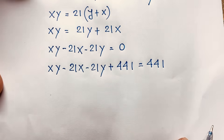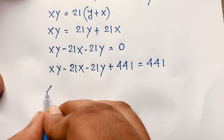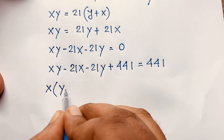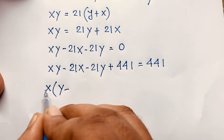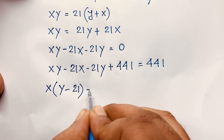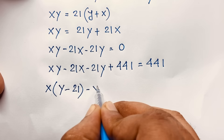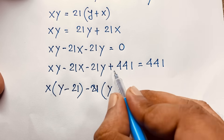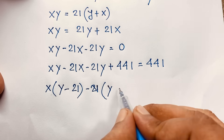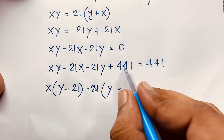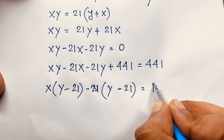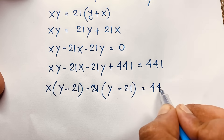You can see easily that x is common here. Taking x as common: x times (y minus 21), and then 21 is common in the remaining terms: minus 21 times (y minus 21), is equal to 441. So we get (x minus 21)(y minus 21) is equal to 441.